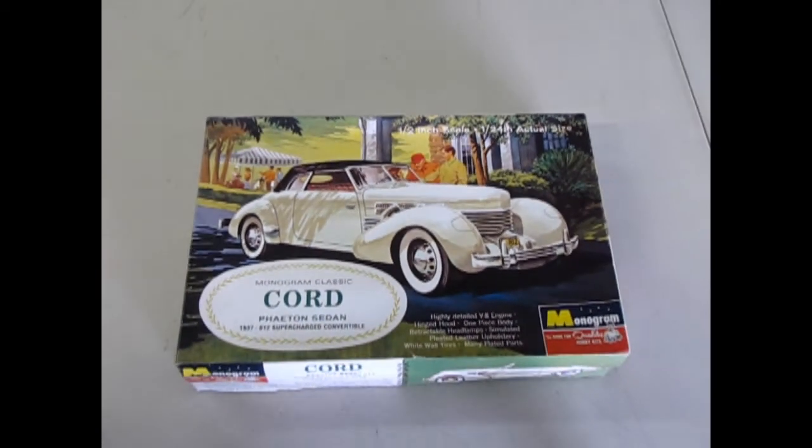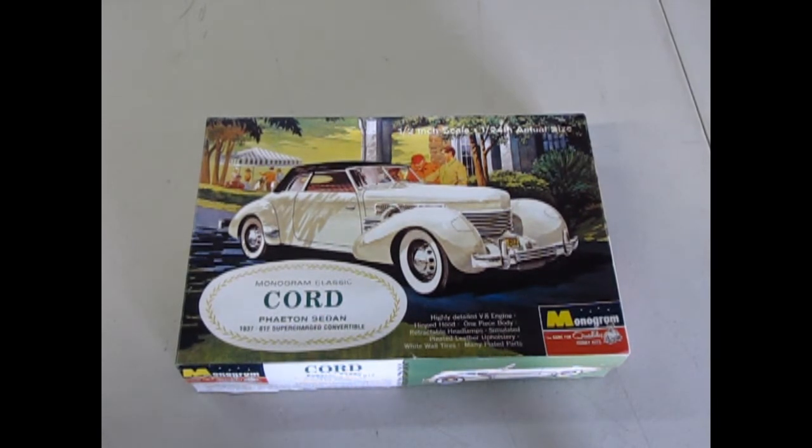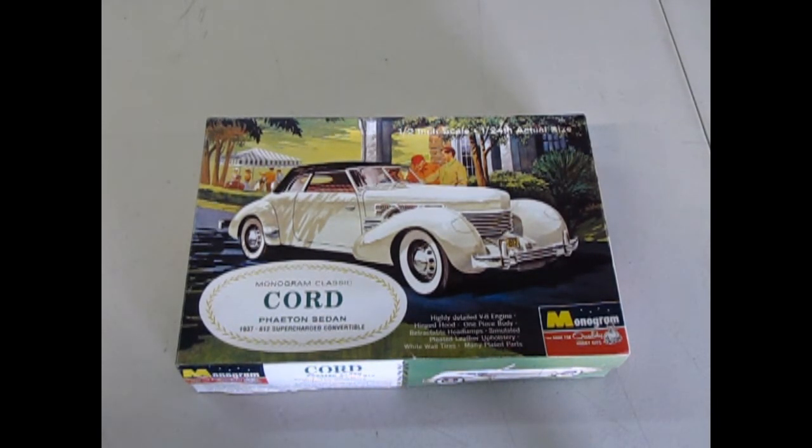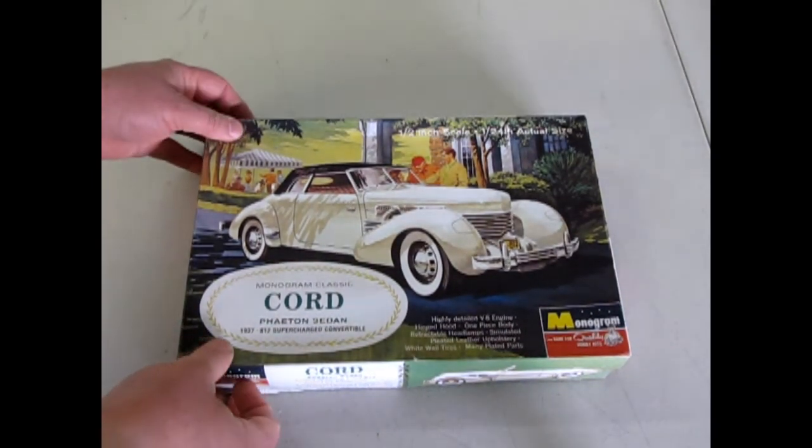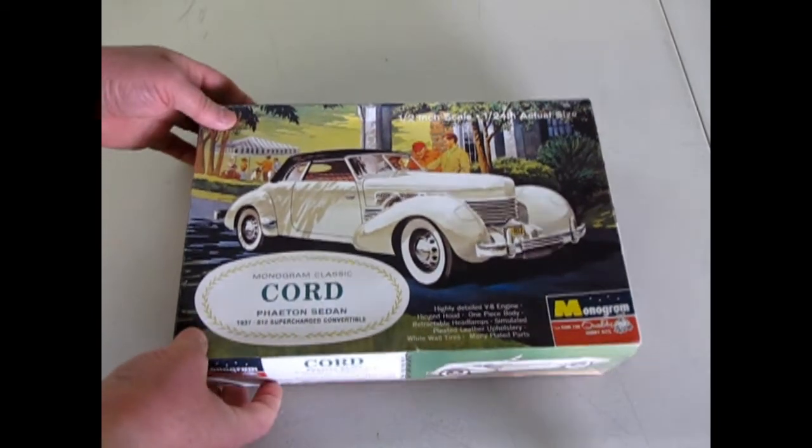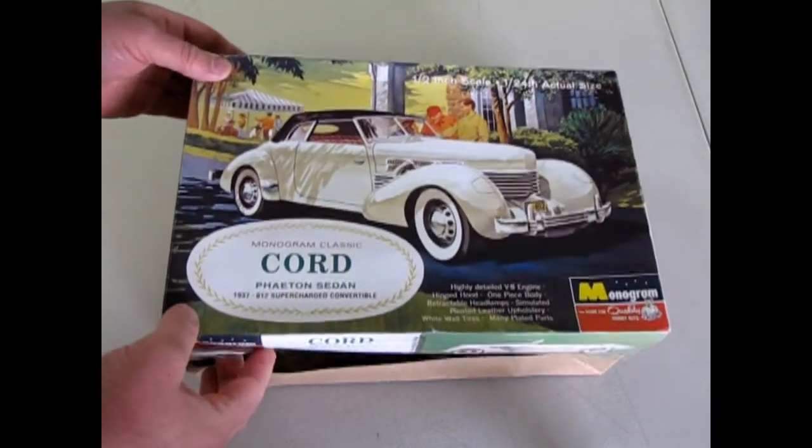And now we turn back our radio dials to 1937 and we get to open up the box on the Monogram Classic Cord Phaeton Sedan, the 1937 812 Supercharged Convertible. Now this box is very nice featuring the original artwork although it is a newer kit.